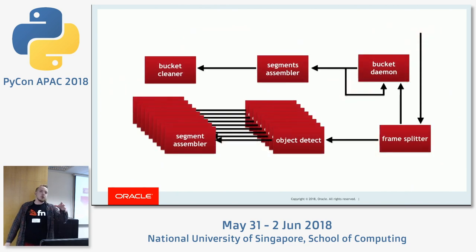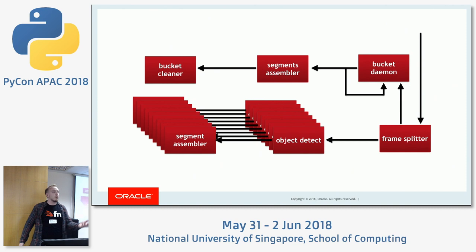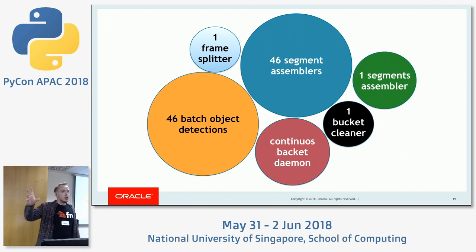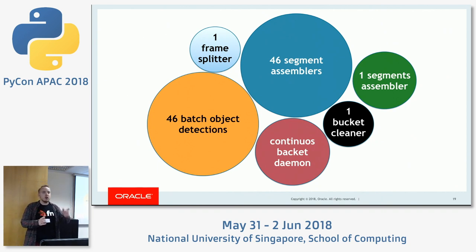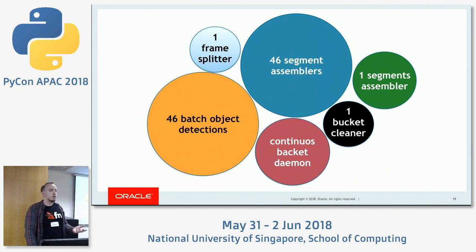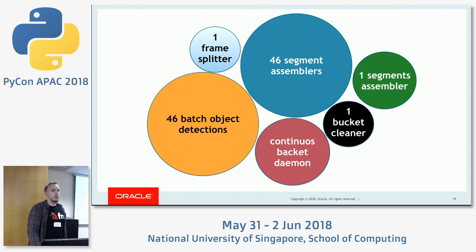This is how the loop structure is done — every arrow here displays the invocation. There is a frame splitter that acts like an entry point to our application. It triggers two functions, and each of those triggers their own function. This is a circular chart that helps you understand how many functions you would get if you run this demo with a video that has 46 seconds. You can see it will start 46 object detections, it will start 46 segment assemblers. It will start a frame splitter and a continuous bucket daemon, because we don't know for how long object detection will take.